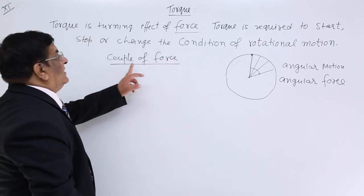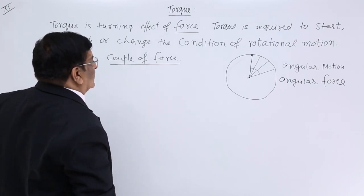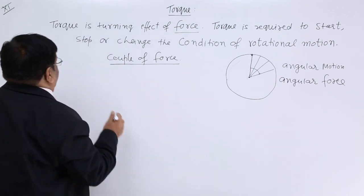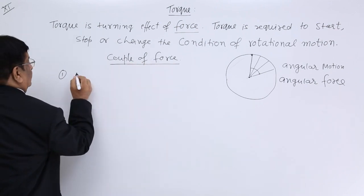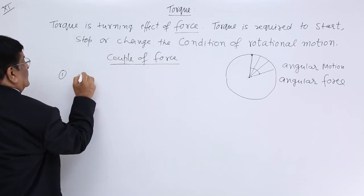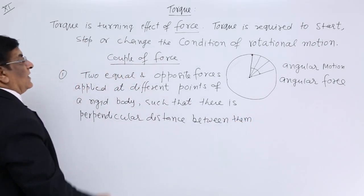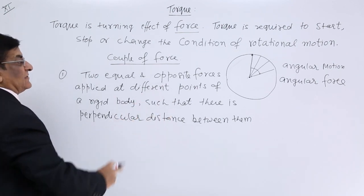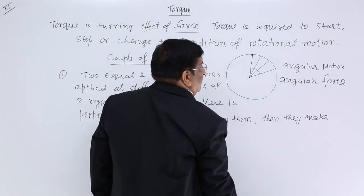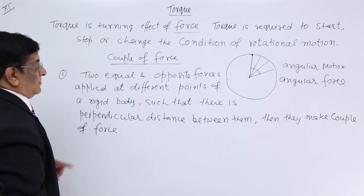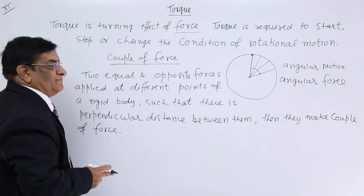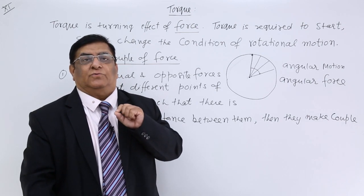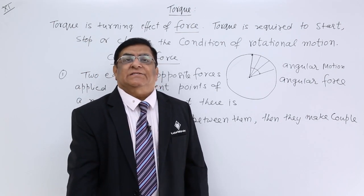We call those two forces a couple of force. What is the condition for this couple of force? Couple of force means two equal and opposite forces applied at different points of a rigid body such that there is a perpendicular distance between them. Then they make a couple of force. The effect of this couple of force is that they will be able to rotate the body. We give the name to this effect, and the name of that effect is torque.